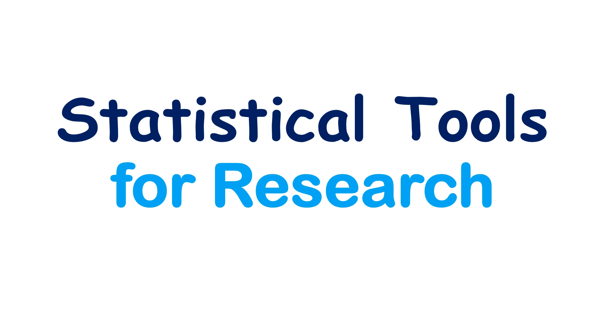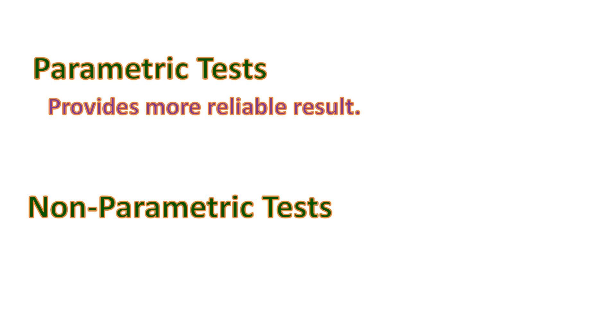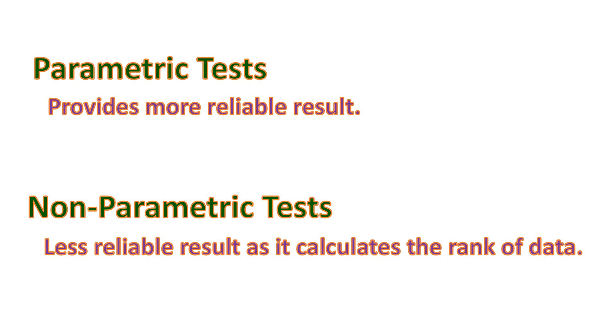In this video I will be talking about statistical tools for research. There are two families of formulas in statistics used in research: one is the parametric test and the second is non-parametric tests. Parametric tests provide more reliable results compared to non-parametric tests, which are less reliable because they calculate the rank of the data.